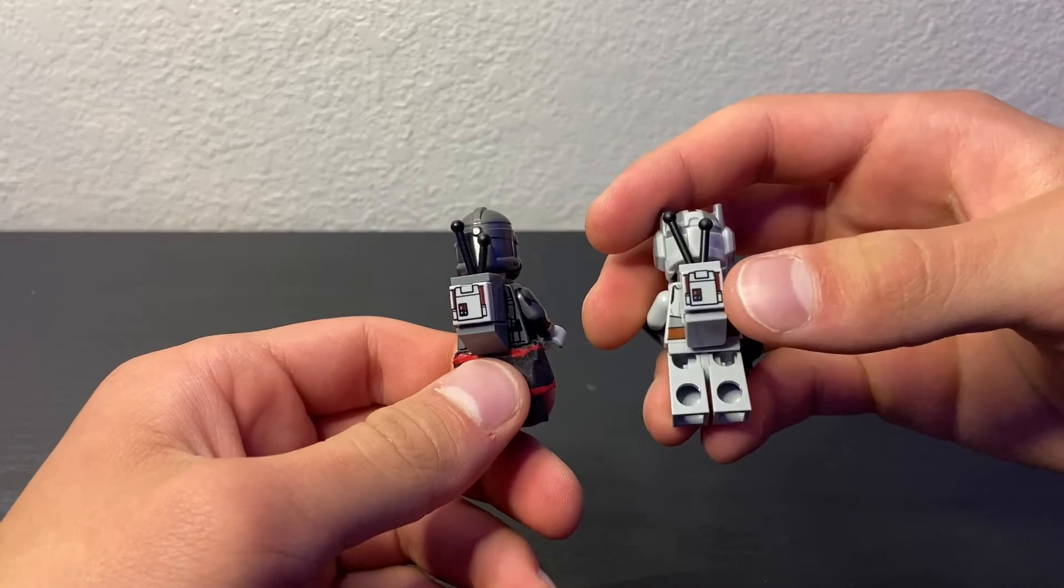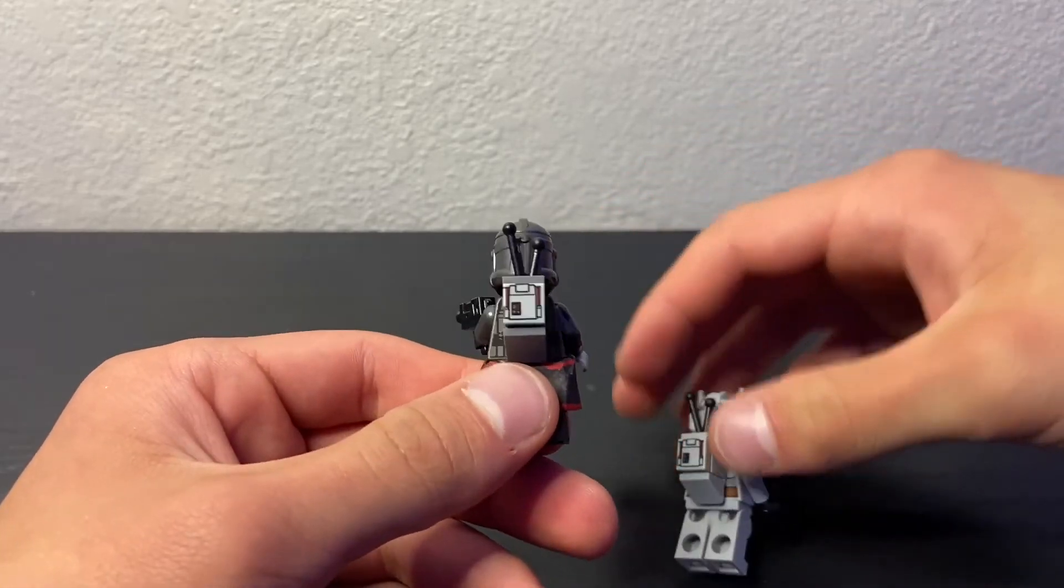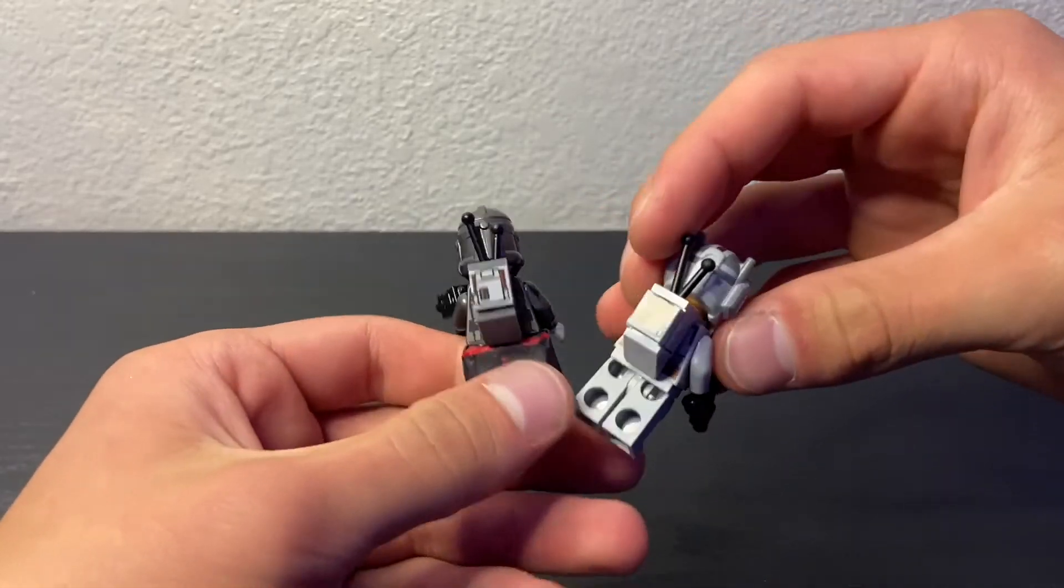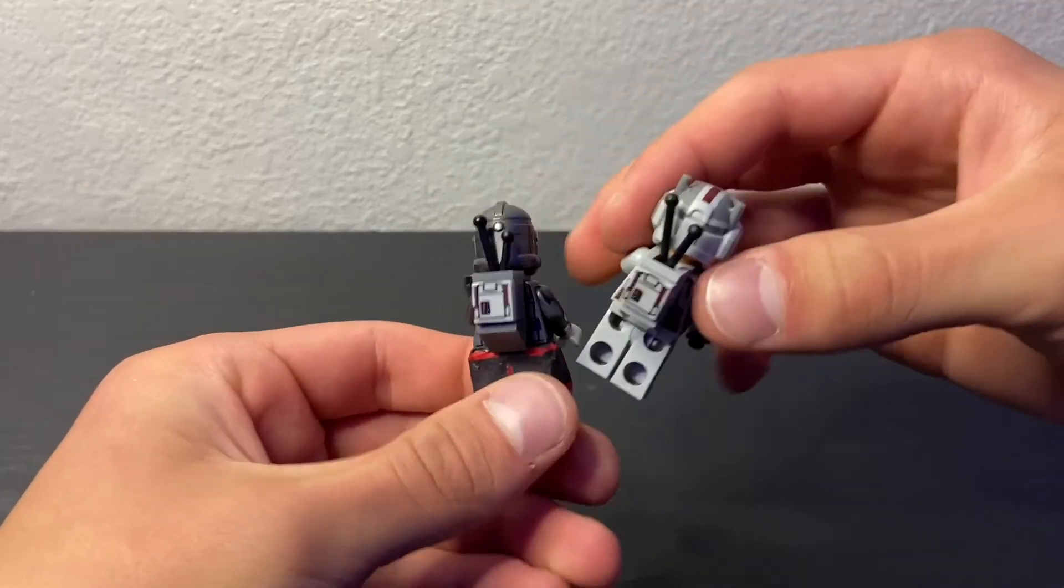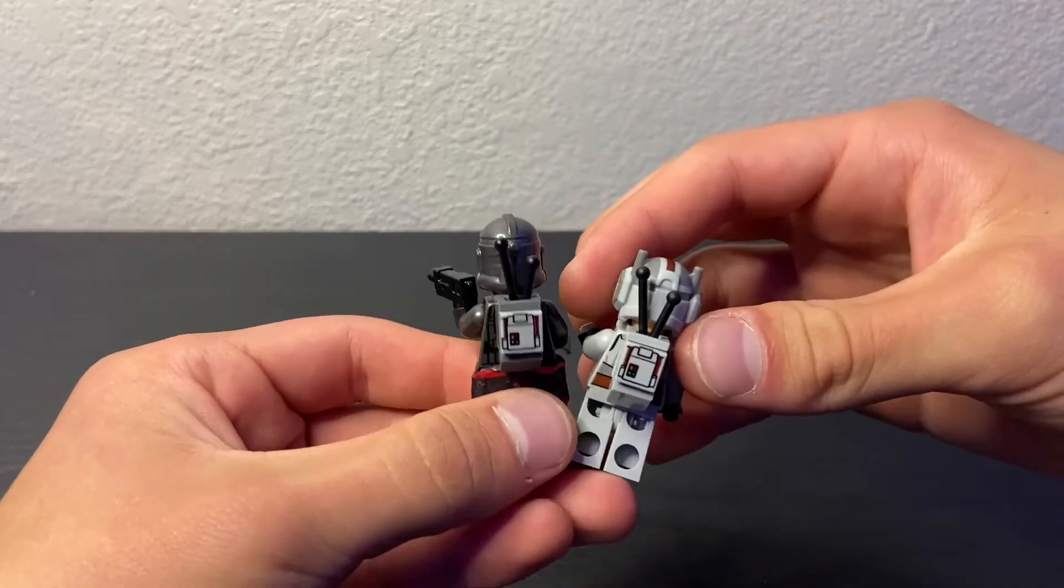So that is how you build the backpacks for both Tech and Echo. Honestly, I like how it looks better on Tech. And it's mostly just because of the printed piece. But yeah, just adding these backpacks on it adds a whole lot more detail without making it super bulky.